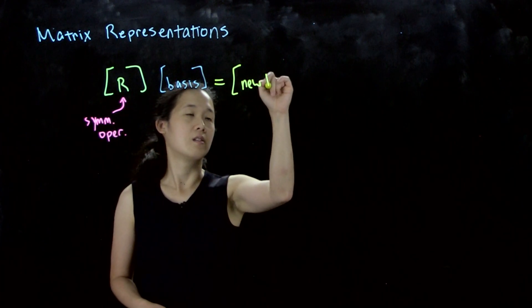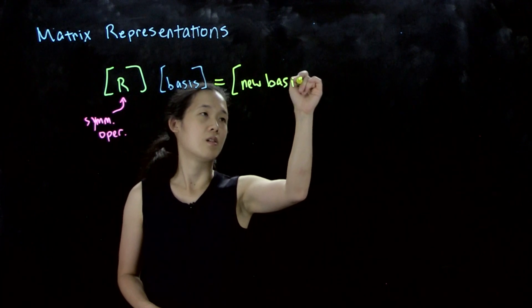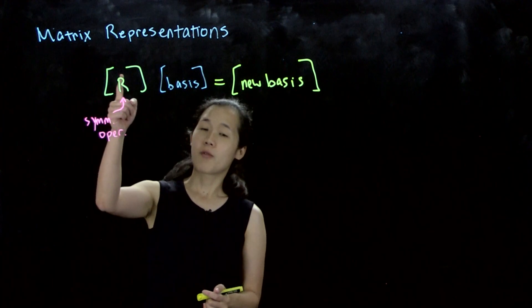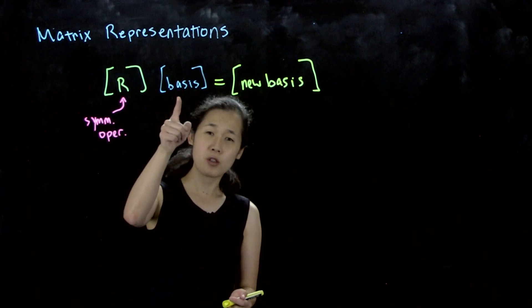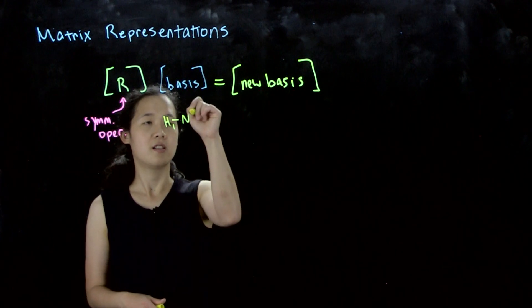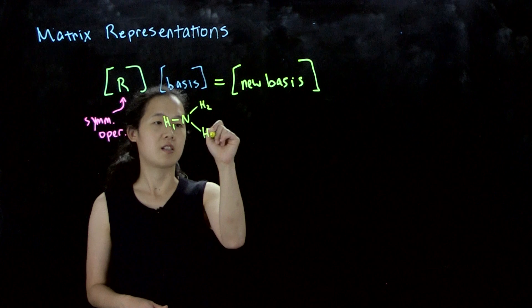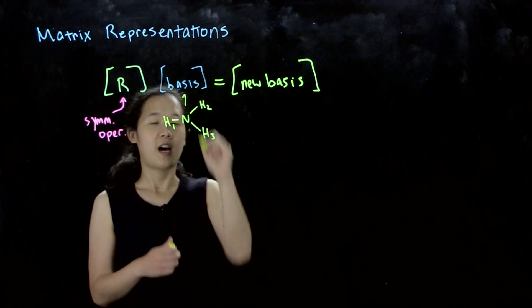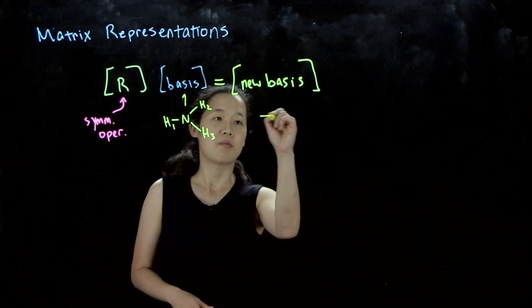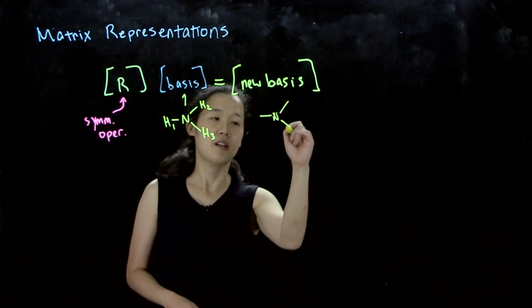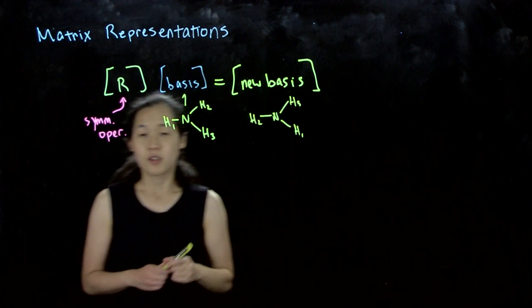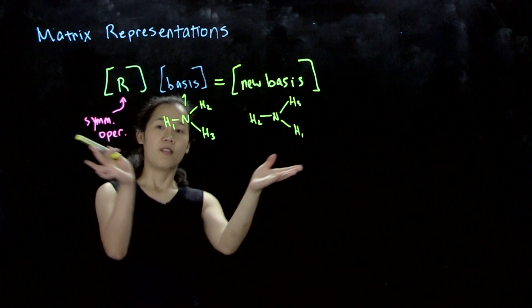In class we did the ammonia molecule. Our operation is C3. How does this original molecule - if we had H1, H2, H3 - end up if we rotate counterclockwise? We become H1, H3, H2. This is what we did spatially.